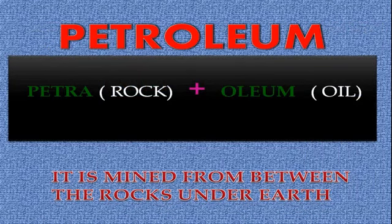The word petroleum is derived from two words: Petra and oleum. Petra means rock, oleum means oil. So, petroleum means rock oil, or oil obtained from rock. Petroleum is a substance mined from between the rocks under the earth.